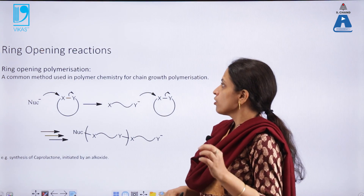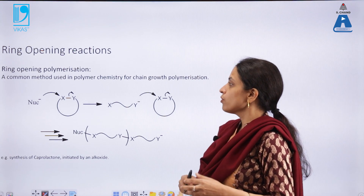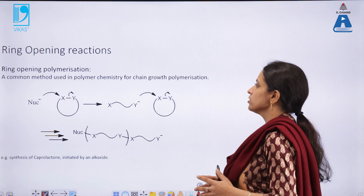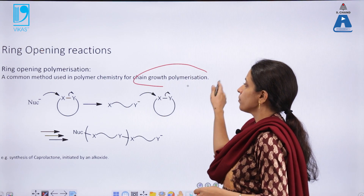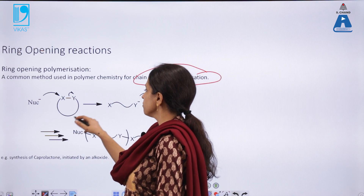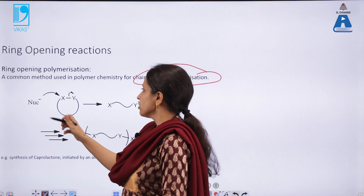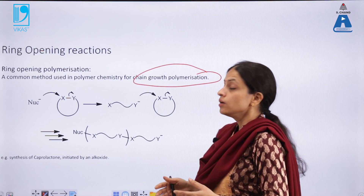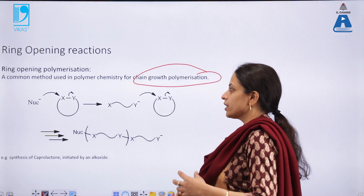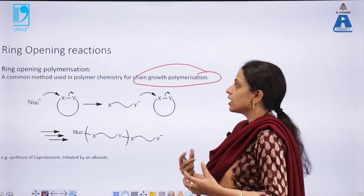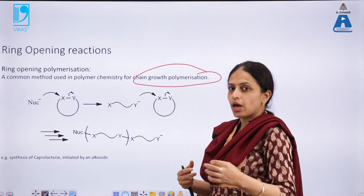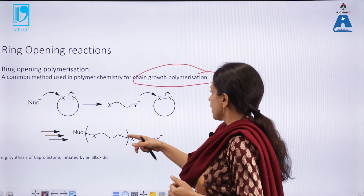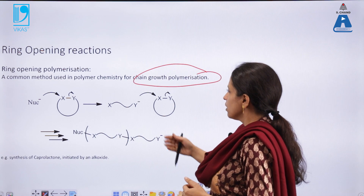Ring opening reactions are an important part of polymer chemistry because they help in the formation of polymers from simple monomers, or from small polymers to large chain polymeric molecules. This is a common method used in polymer chemistry for chain growth polymerization. Here you can see a nucleophile attacking a simple cyclic monomer, helping in opening the ring. The mechanism is a kind of substitution reaction happening in a concerted way, where both the nucleophile coming in and the leaving group detaching occur in a single step.